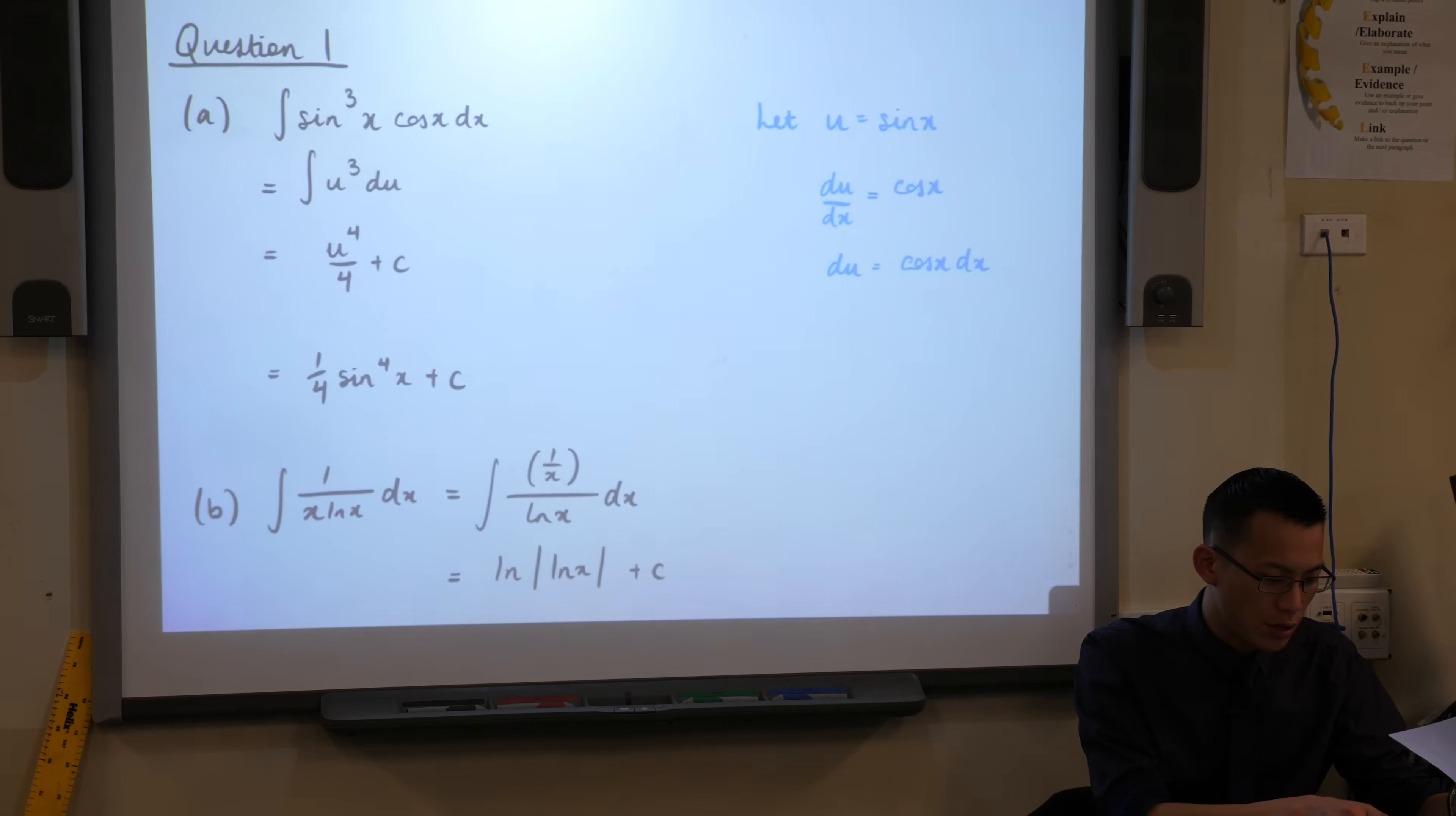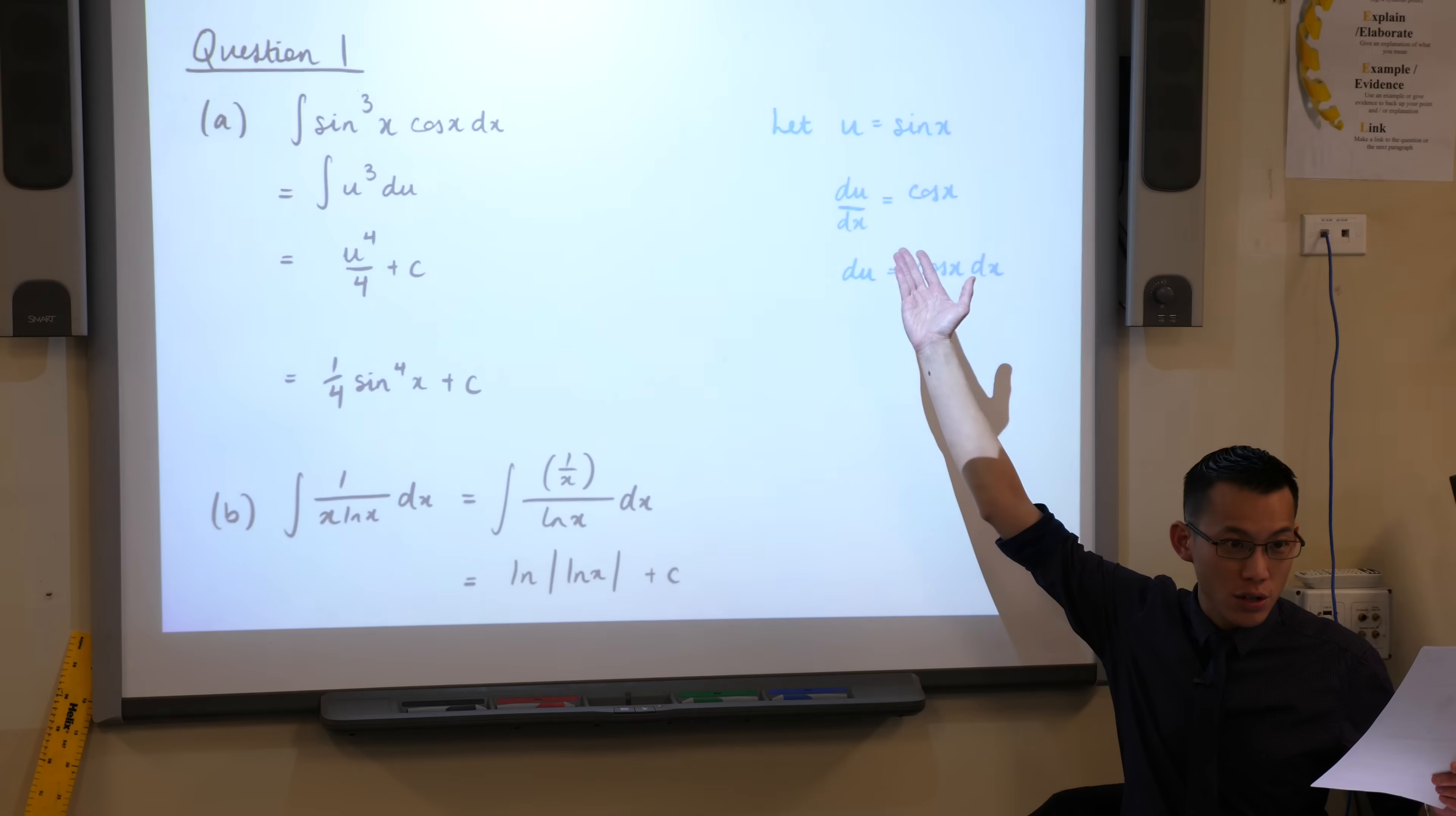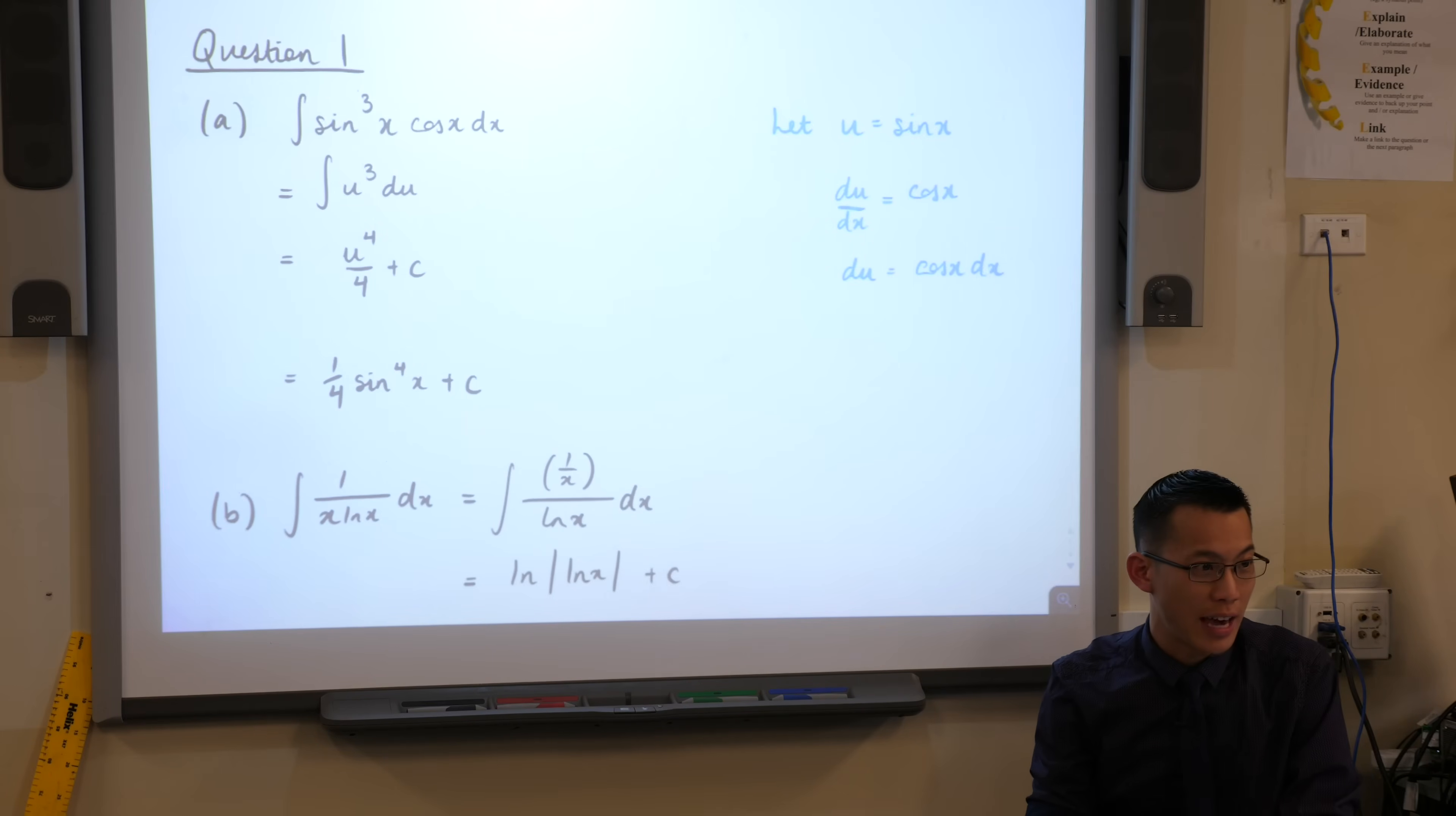So it started off fairly gentle. You notice we always supply you what the substitution should be. So you should take that U and go ahead, do your substitution, but make sure you do that properly and know what your derivative is and how to pop that back into your integral. So for parts A and B, I thought that was okay.